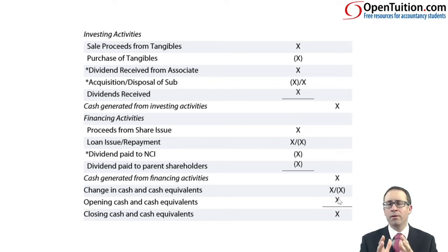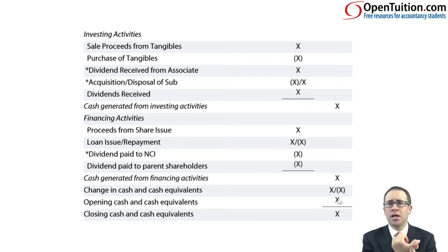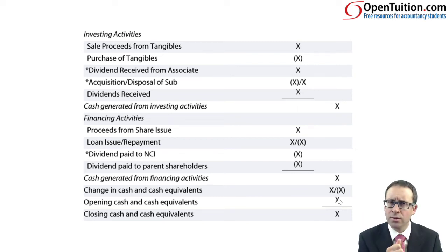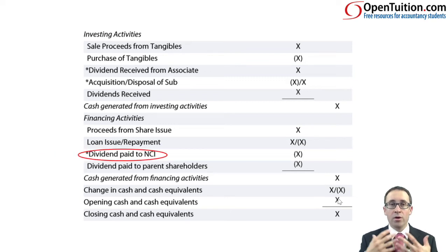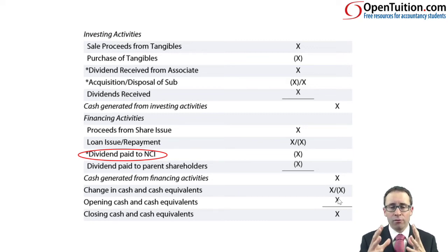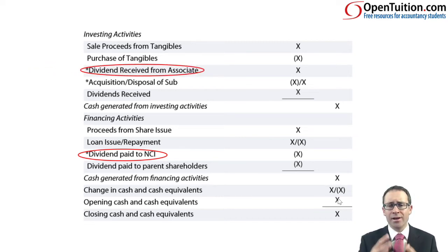One of the big problems students have with cash flows is that everybody remembers the position statement and the performance statement, but people struggle with cash flows. So spend a bit of time revising it. We're essentially looking at the investing and the financing activities. Within your financing activities, you can see the dividend paid to the non-controlling interest — that is in brackets, that is an outflow. The dividend received from an associate is an inflow and goes within your investing activities.